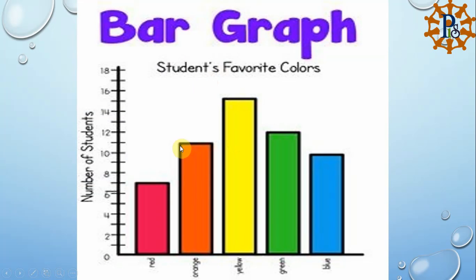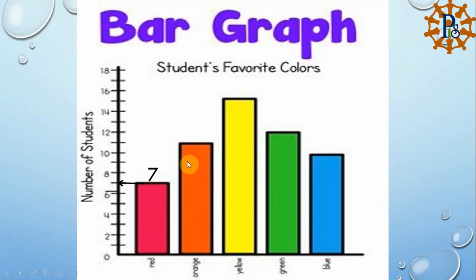To solve bar graph questions, we first need to know the value of each bar. We get the value from the vertical line on the side. We draw a line from the top of each bar across to the vertical axis to read the number. For example, if a bar falls between 6 and 8, the value is 7.